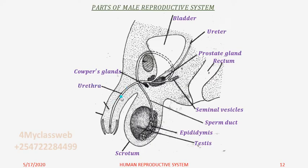The sperm joins this tube here that we call the urethra. The urethra is inside the erectile tissue. The erectile tissue helps the penis to become erect in readiness to penetrate into the vagina. And this is the penis. Those are the main parts of the male reproductive system.